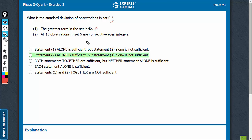Look at the second one. All 15 observations are consecutive even integers. So if the smallest term is x, the respective terms are going to be x plus 2, x plus 4, until x plus 28. These are going to be the 15 terms.